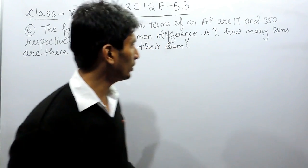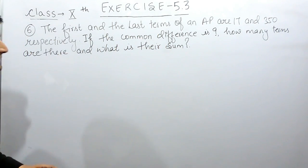Hello everyone, in this video we are going to solve question number 6 of exercise 5.3. The question says the first and the last term of an AP are 17 and 350 respectively. If the common difference is 9, how many terms are there and what is their sum?